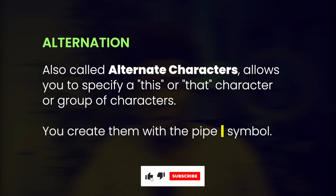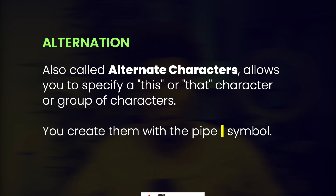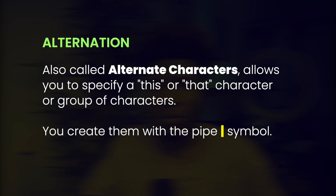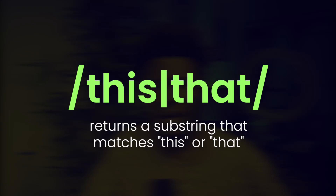What is alternation? Alternation, also called alternate characters, allows you to specify a 'this or that' character or group of characters. You create them with the pipe symbol, which is the vertical stroke or vertical line. You can find that on your keyboard. So a pattern like 'this|that' will match the characters 'this' or 'that'.